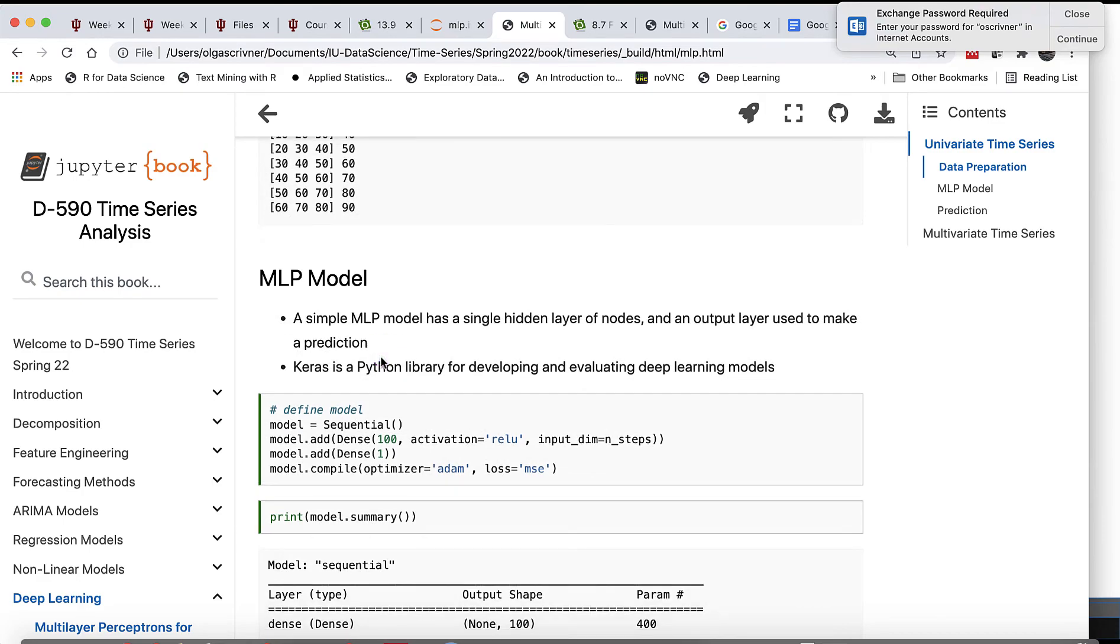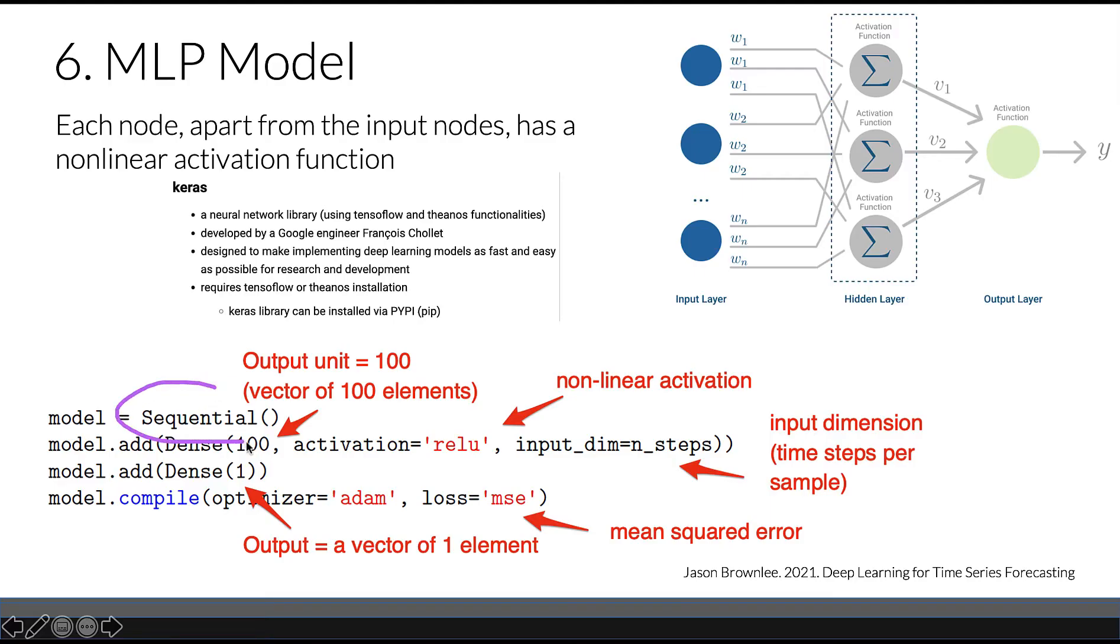Let's look at our MLP model. We have to build a sequential model. We'll be using a Python library, Keras, that can be installed with pip. In our sequential model, we're adding a dense layer with 100 elements output. This is going to be our hidden layer, with activation function ReLU, a common nonlinear activation function, and our input dimension is number of steps that we arbitrarily defined. In this case we defined it as three.